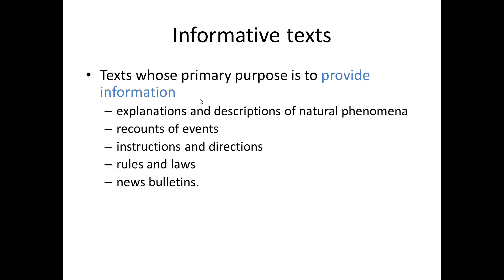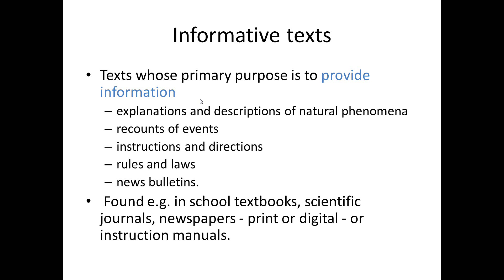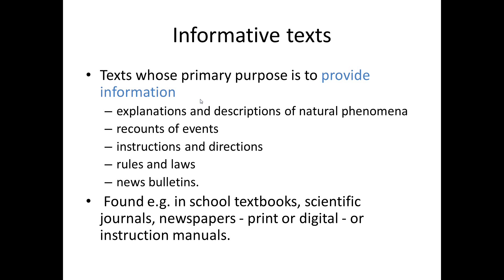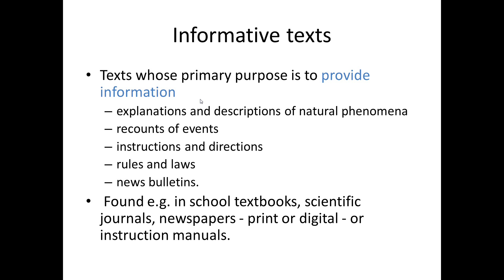Informative texts are texts whose primary purpose is to provide information. This includes explanations and descriptions of natural phenomena, recounts of events, instructions and directions, rules and laws, and news reports. You might find such texts, for example, in school textbooks, scientific journals, newspapers — print or digital — or instruction manuals.